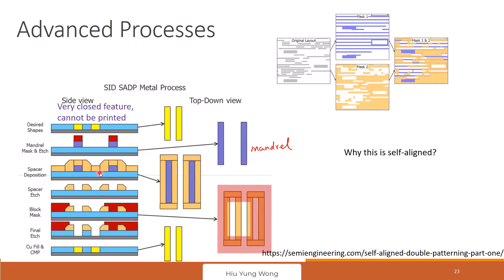This process is called self-aligned double patterning. You see, we do it two times in order to print two very close features.